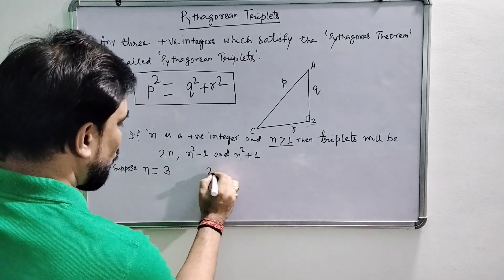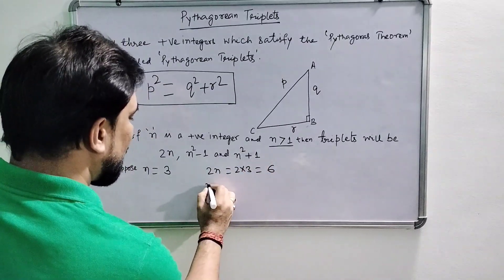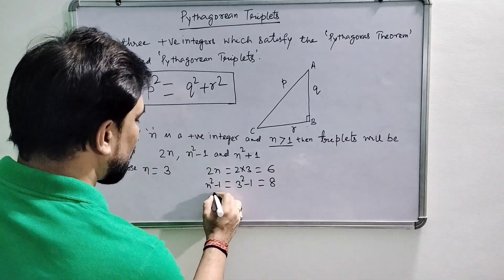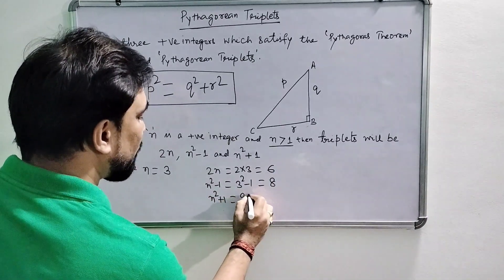The first triplet will be 2N, which means 2 × 3 = 6. The second will be N² - 1, which means 3² - 1 = 8, and the third will be N² + 1, which means 9 + 1 = 10.